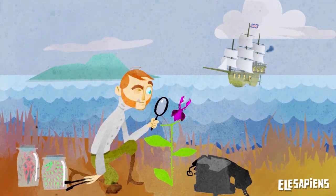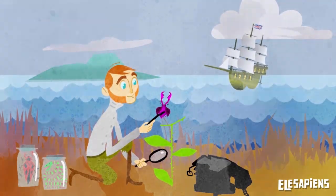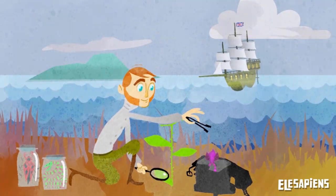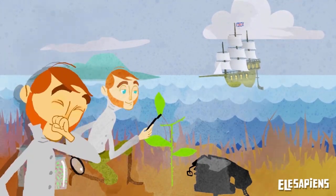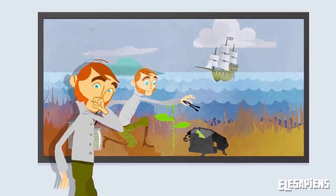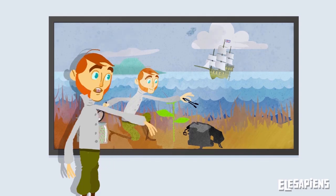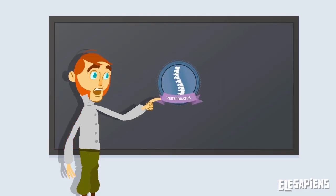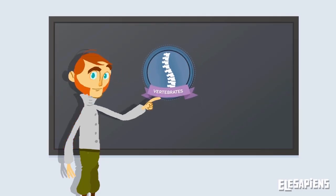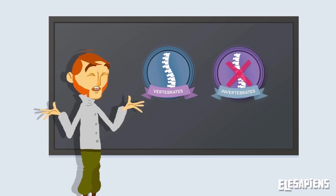Great English naturalist Charles Darwin knew a lot about studying and classifying animals. The animal kingdom can be classified into two large groups: vertebrate animals, that have a vertebral column or spine, and invertebrate animals, that do not have it.